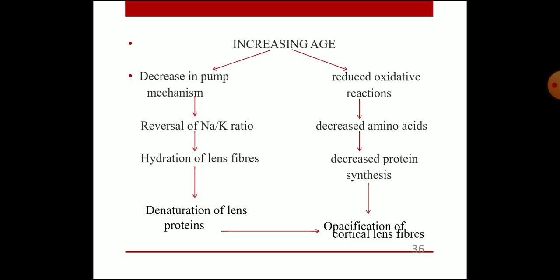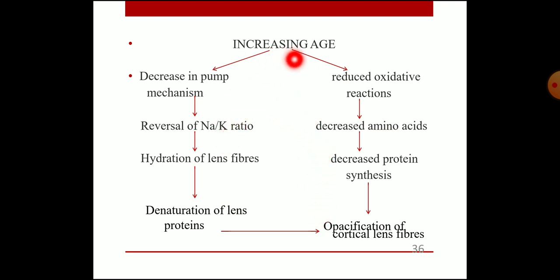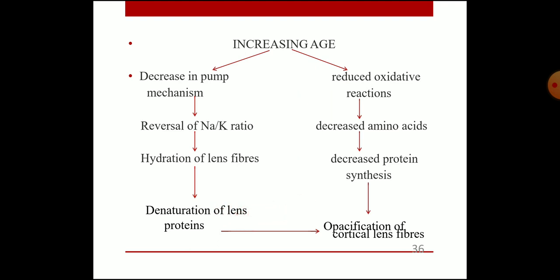With increasing age: decreased pump mechanism, reversal of sodium-potassium ratio, hydration of lens fibers, denaturation of lens proteins, and opacification of cortical lens fibers. Another pathway involves reduced oxidative reactions, decreased amino acids, decreased protein synthesis, and subsequent opacification.